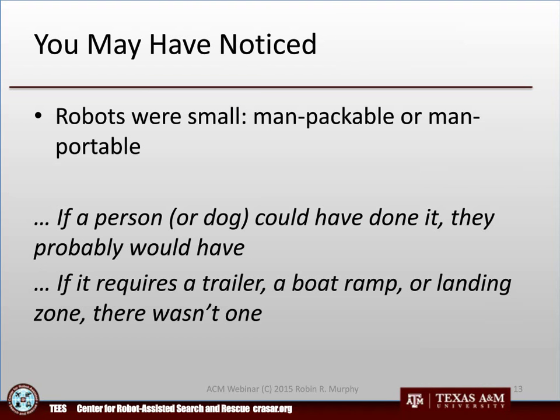Some fun things you can do now: virtual reality reconstruction — Russ Taylor out of North Carolina did one for us — gives you an idea of what robots look like and what they can do. You probably noticed that all of them were small. Even the water-based ones were ones that two people could literally throw in the water. We call that man-packable if you can put it in a backpack, or man-portable if two people can carry it. If a person or a dog could have done the task, they probably would have — that's why having super small robots for building collapses is really important. If it requires a trailer, a boat ramp, or a landing zone, there isn't going to be one. You get in with an SUV and carry it the rest of the way.